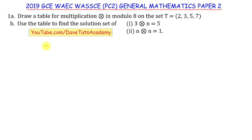In this question on modular arithmetic, we are asked to draw a table for multiplication in modulo 8 on the set T = {2, 3, 5, 7}. We will then use the table to find the solution set of 3 × n ≡ 5 (mod 8) and n × n ≡ 1 (mod 8).